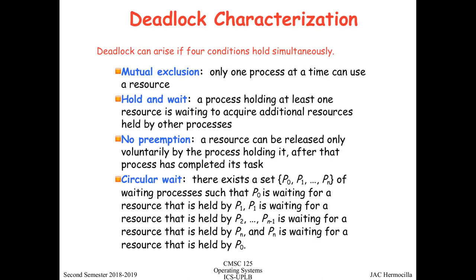The third condition is no preemption: a resource can be released only voluntarily by the process holding it, after that process has completed its task. Given the text editor scenario, let's say Firefox is using the disk. Since Firefox is given access to the disk, it is the Firefox process that can release the disk. There are no other processes that can take that disk away from Firefox — the Firefox process has to release the disk voluntarily. That is no preemption.